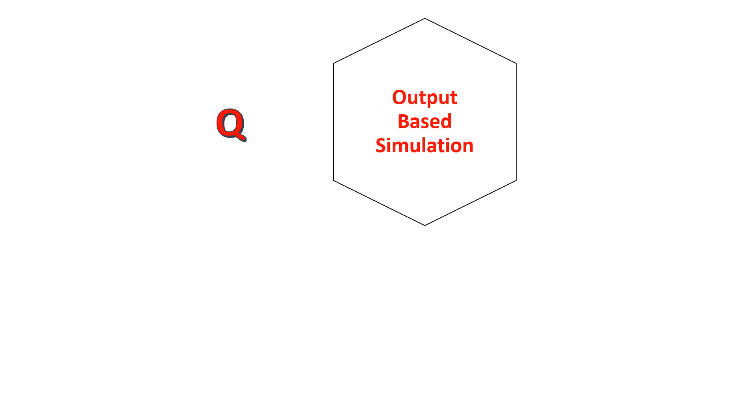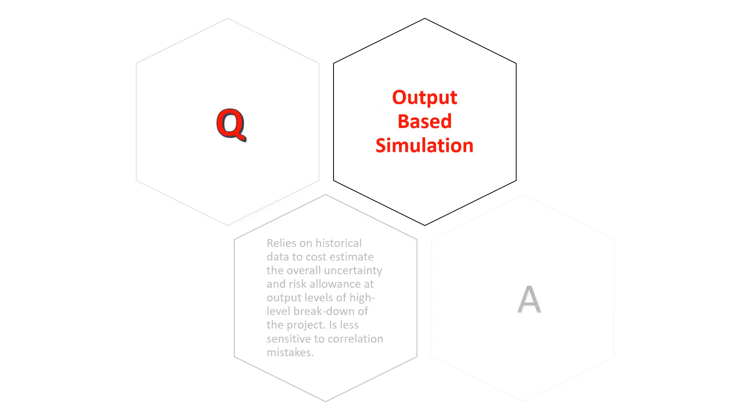Output based simulation: Relies on historical data to cost estimate the overall uncertainty and risk allowance at output levels of high level breakdown of the project. Is less sensitive to correlation mistakes.